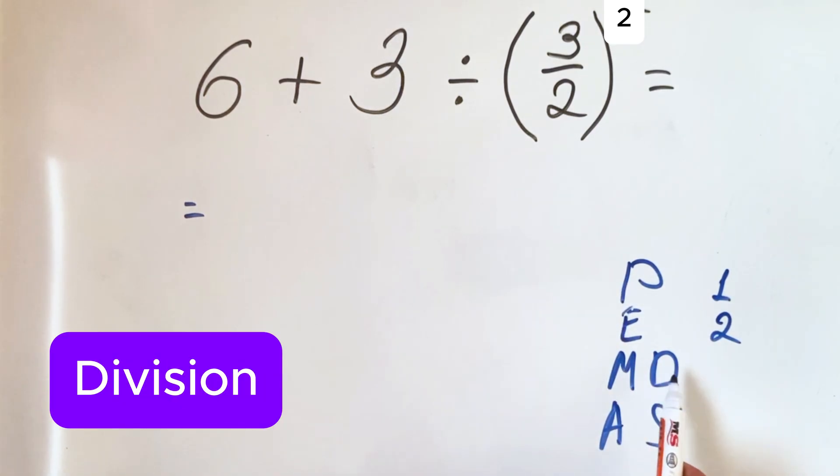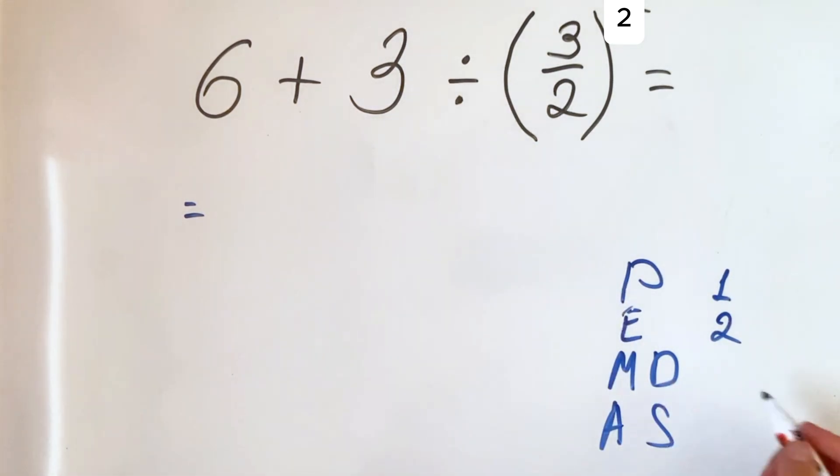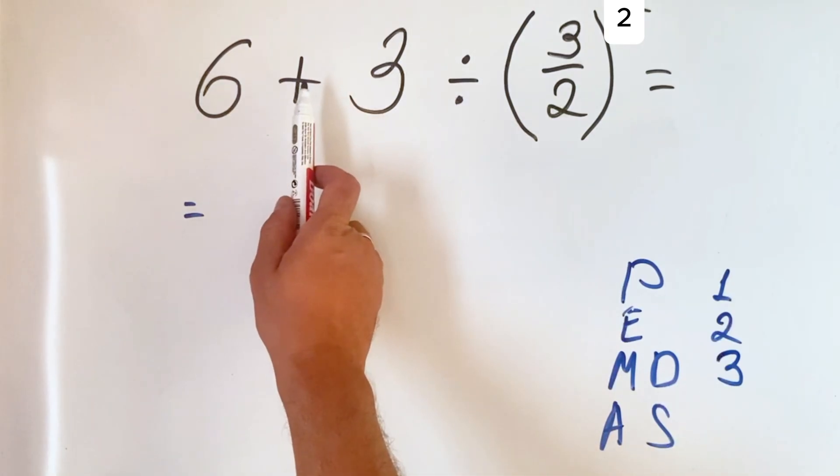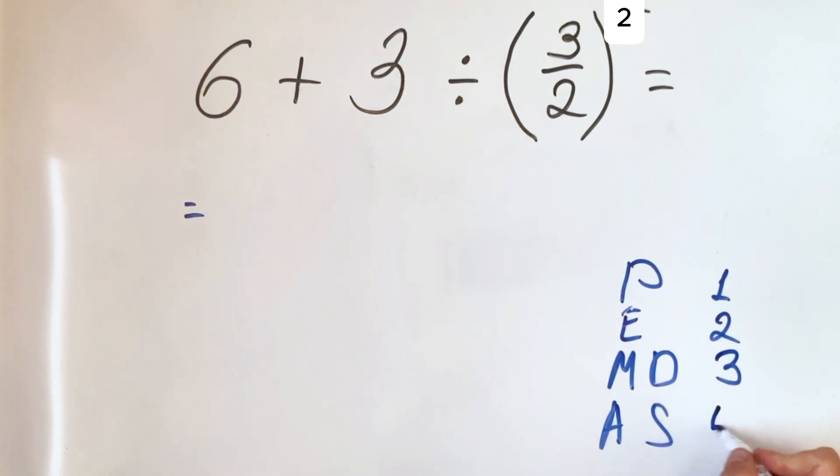M for multiplication and D for division—in our case we have division, so we do it third. A for addition and S for subtraction—in our case we have addition, and we do it fourth.